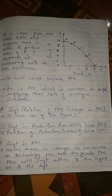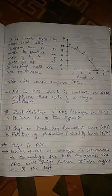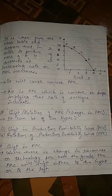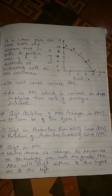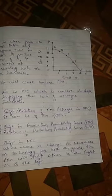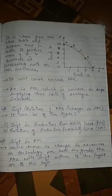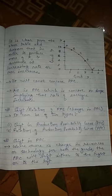The next heading is shift or rotation of PPC, also called change in PPC. It can be of two types: shift in production possibility curve and rotation of production possibility curve. A shift in PPC occurs where there is a change in resources or technology for both goods — the PPC will shift either to the right or to the left.